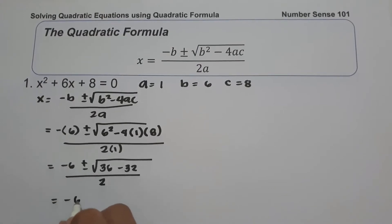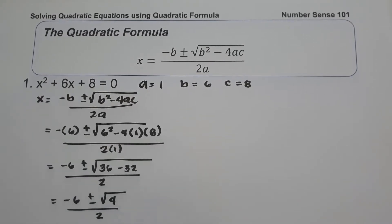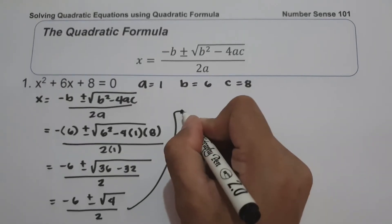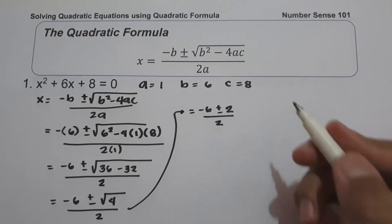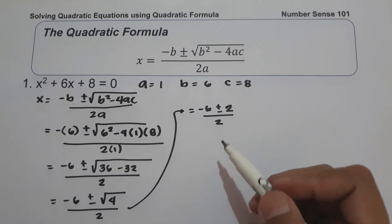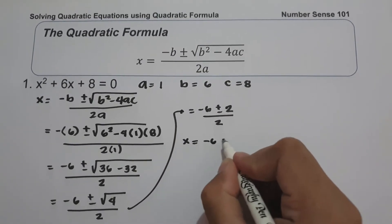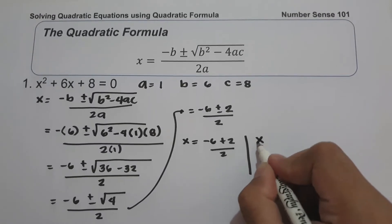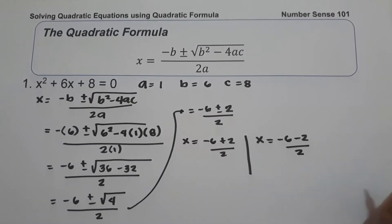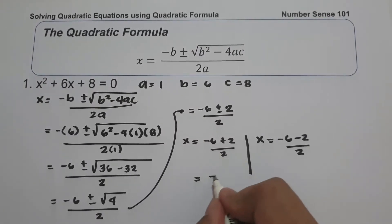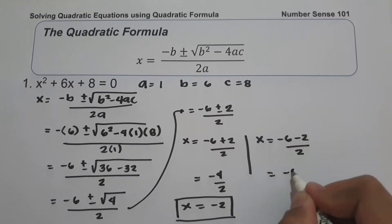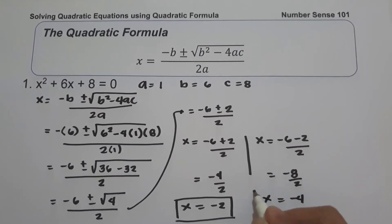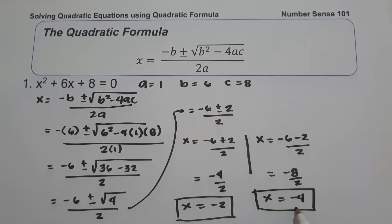So we have negative 6 plus or minus the square root of 36 minus 32, that is 4, all over 2. The square root of 4 is positive and negative 2, all over 2. Since the value of square root of 4 is positive and negative 2, we are going to have two equations. So x equals negative 6 plus 2, all over 2 — that's negative 4 divided by 2, which is negative 2. And x equals negative 6 minus 2, all over 2 — that's negative 8 divided by 2, which is negative 4. So the values of x are negative 2 and negative 4.